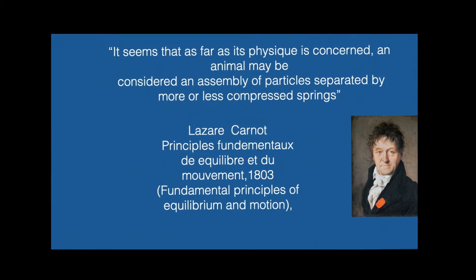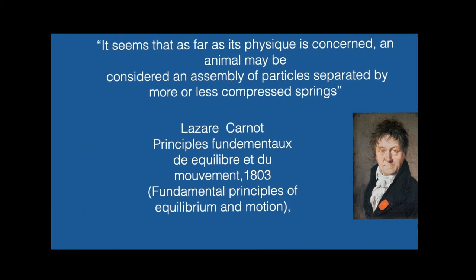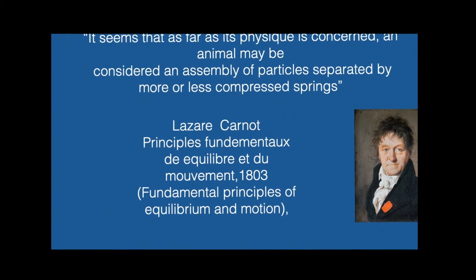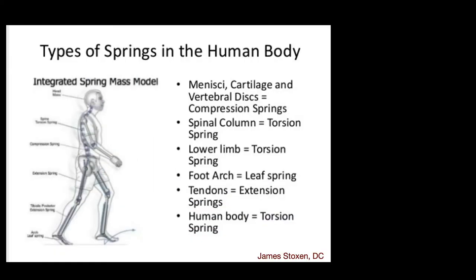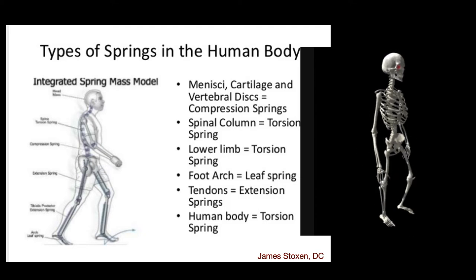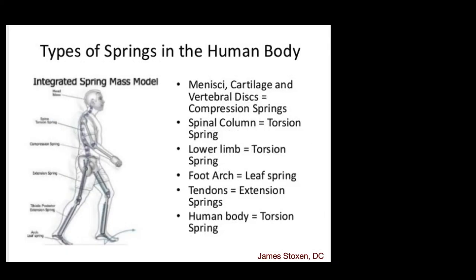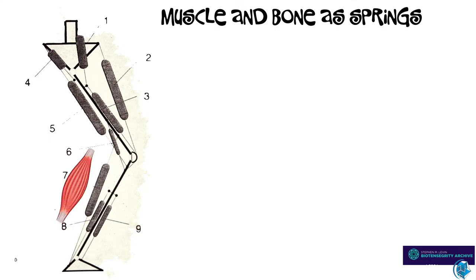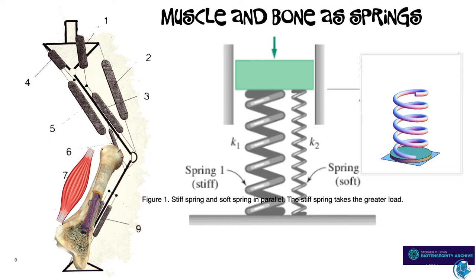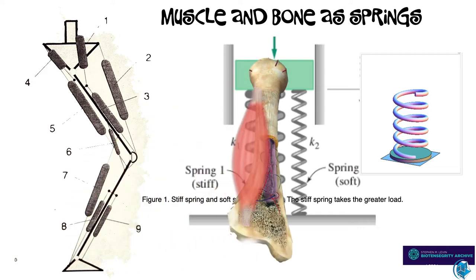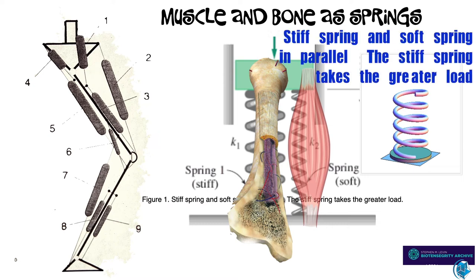Let's revisit Carnot and his body springs. An animal may be considered an assembly of particles separated by compressed springs. This chart depicts all sorts of springs in the body, but left out what I consider the most important springs — the bones. The usual discussion around springs in the leg concerns muscles, but for some unknown reason no one considers the bones. Bones are much better springs than muscles, and Carnot did not exclude them from his description. When you load stiff springs like bone and softer springs like muscles in parallel, it is the stiff springs that do all the work.